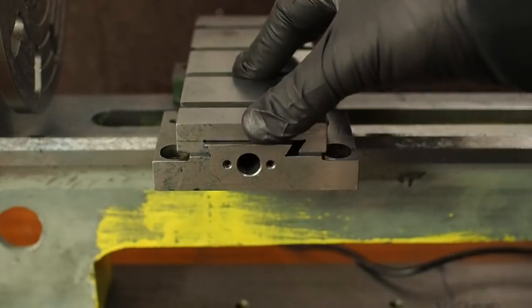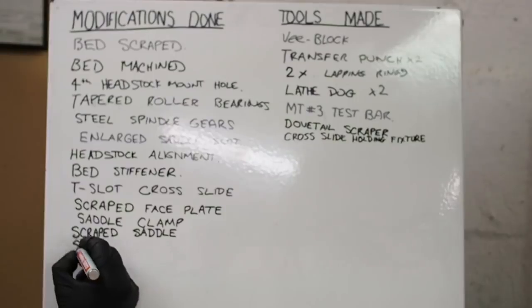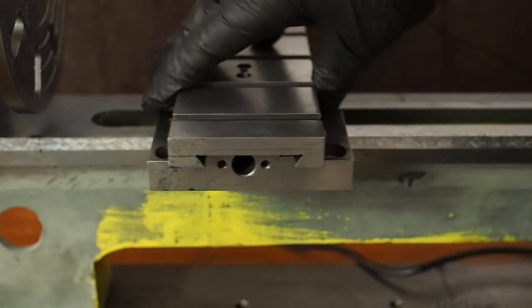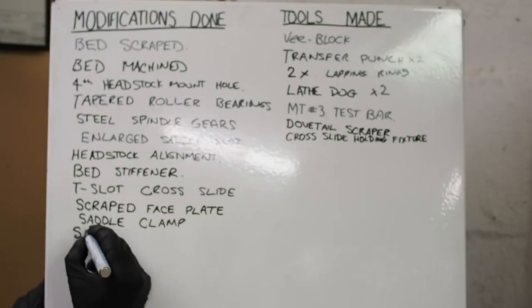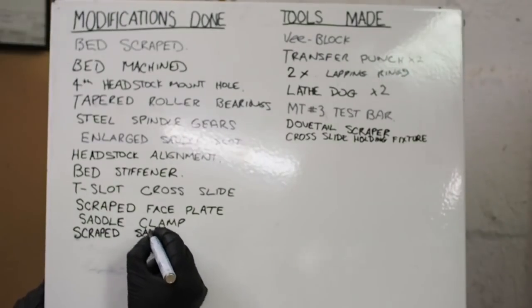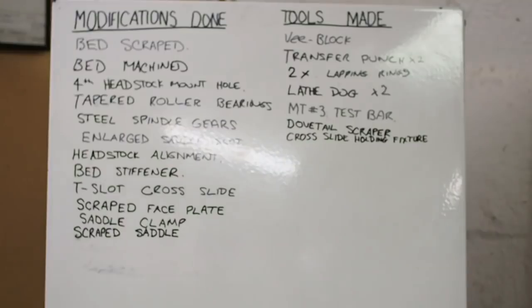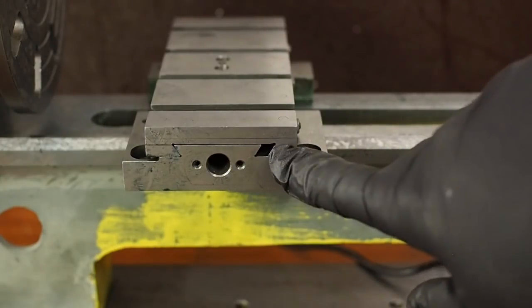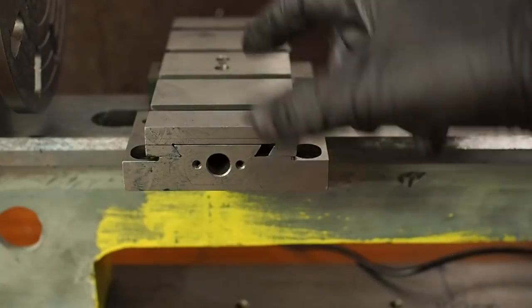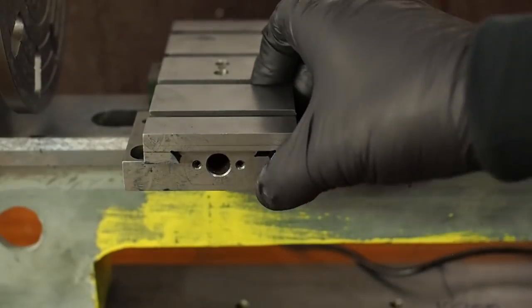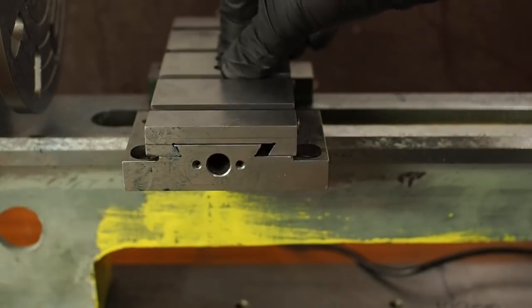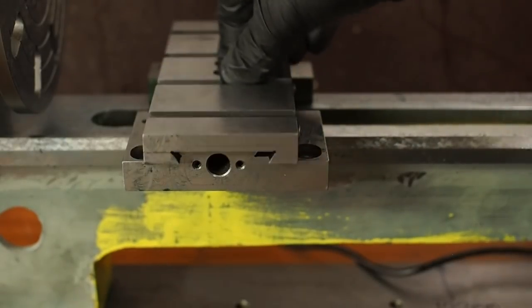Well that took a while, but I've now finished scraping in the cross slide and the saddle. The next task will be making a new gib strip. This one's too short, so I want to make a new one the full width, but I think that's going to be for next week because it's time I start cutting some of this footage together, and that's also something that takes me quite a while.